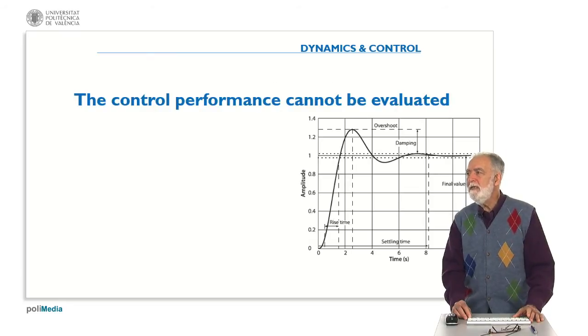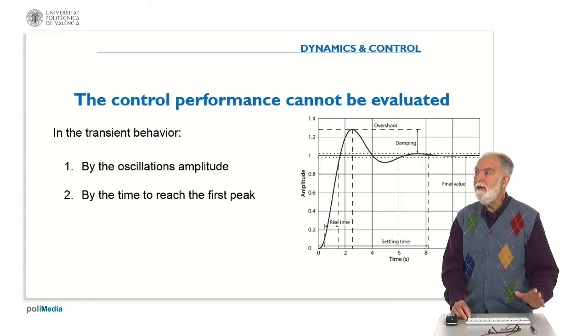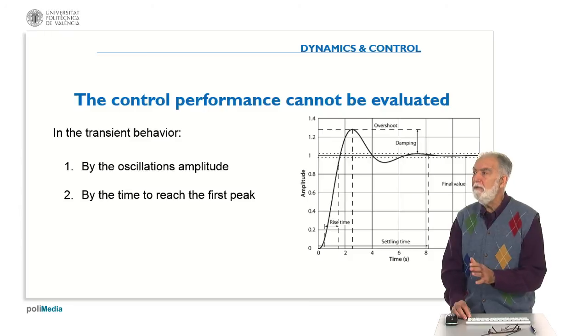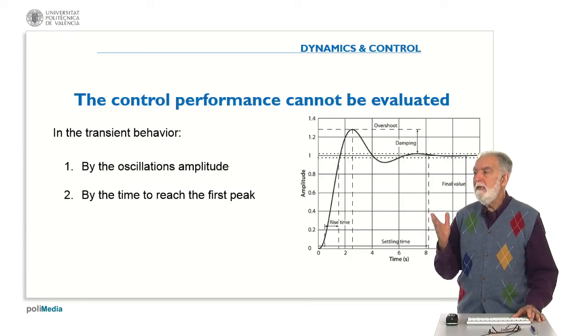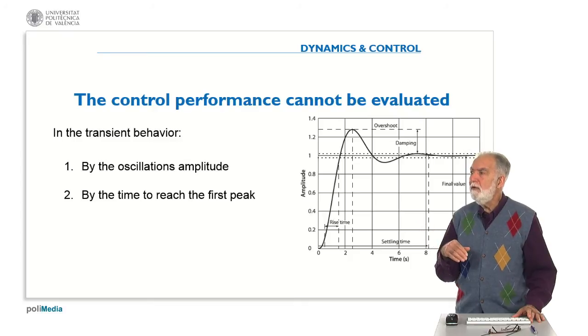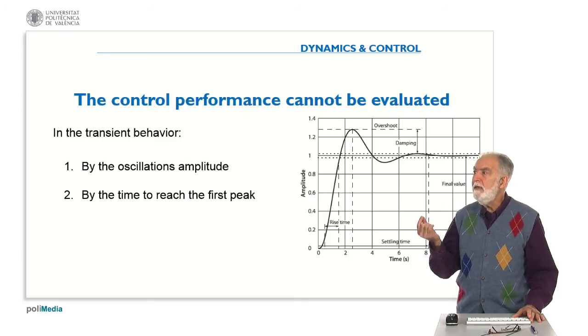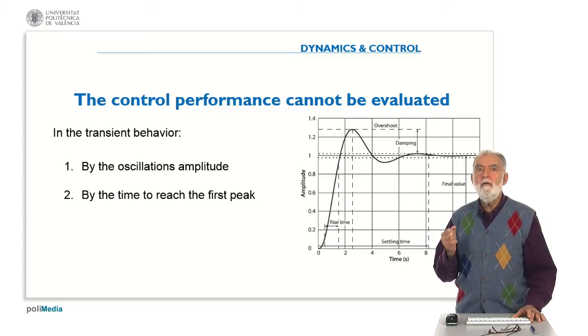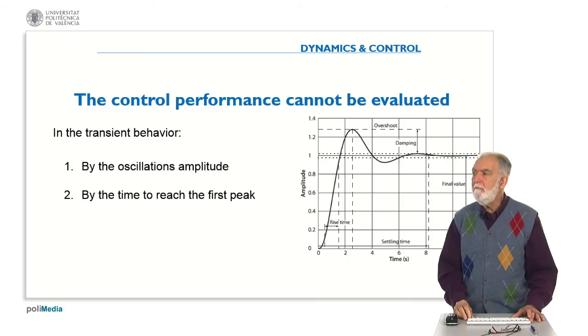So, the question is the control performance cannot be evaluated in the transient behavior by the oscillations amplitude or by the time to reach the first peak? That means, is that true or it's false? In the sense that, can we evaluate the control performance by the oscillations amplitude or by the time to reach the first peak?